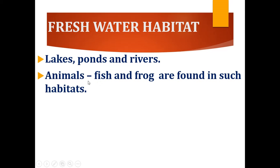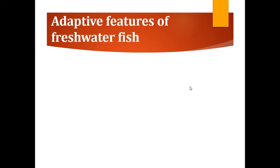Animals such as fish and frog are found in freshwater habitats. Now let's see the adaptive features of freshwater fish. Freshwater fish has certain features which enable it to survive in freshwater.